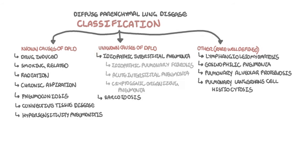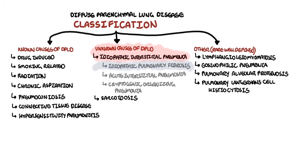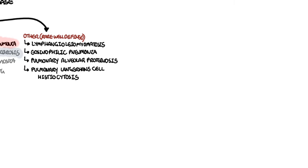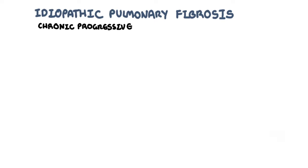Idiopathic pulmonary fibrosis is the main idiopathic interstitial pneumonia, which is a diffuse parenchymal lung disease of unknown cause. Idiopathic pulmonary fibrosis is a chronic, progressive fibrotic interstitial lung disease of unknown cause that primarily occurs in older adults.